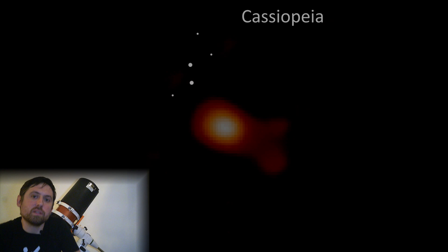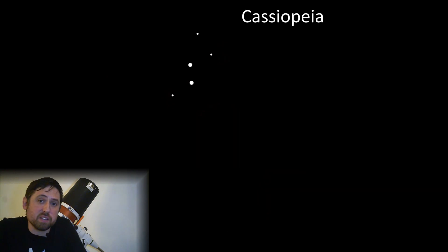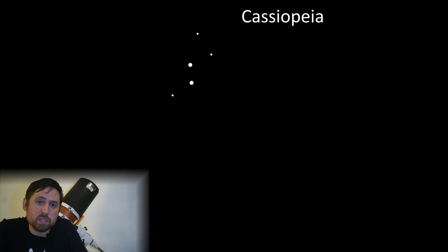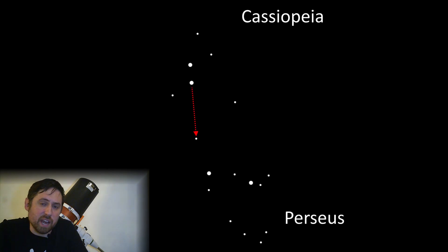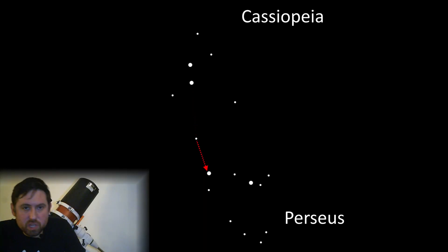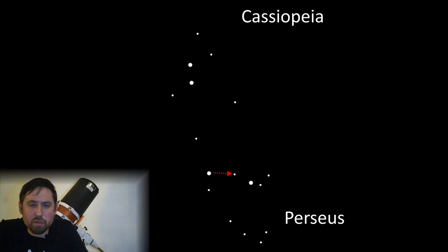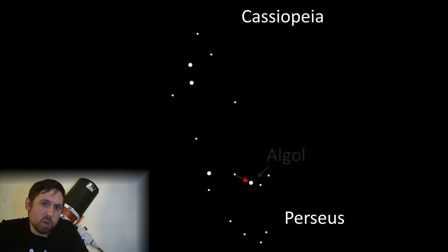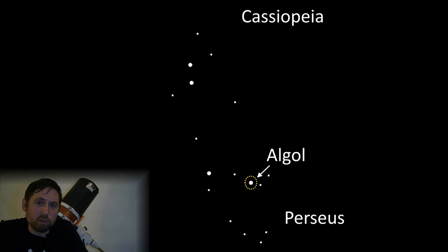To find Algol you must first find the Perseus constellation. To do this, find the bright signpost constellation Cassiopeia and then draw an imaginary line down from gamma Cassiopeia down to the star Rhubach. Once you are in the Perseus constellation, follow the stars down through the constellation one by one until you reach the star Algol.